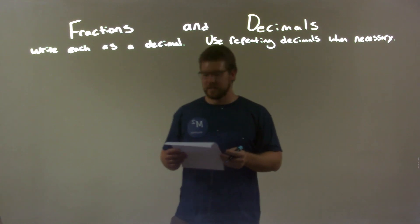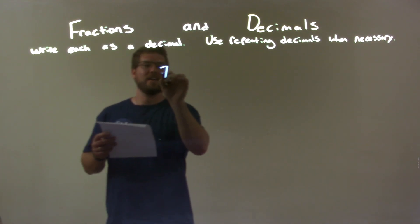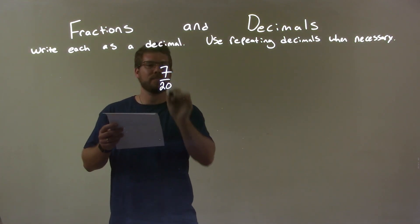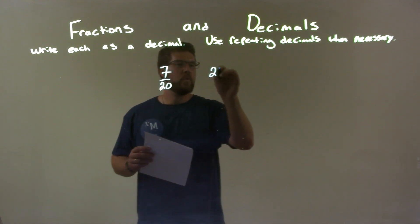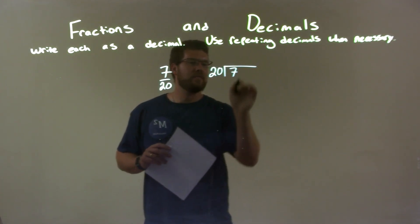If I was given this fraction, 7 over 20, well, I have 7 over 20 here. So we're doing long division of 20 going into 7.